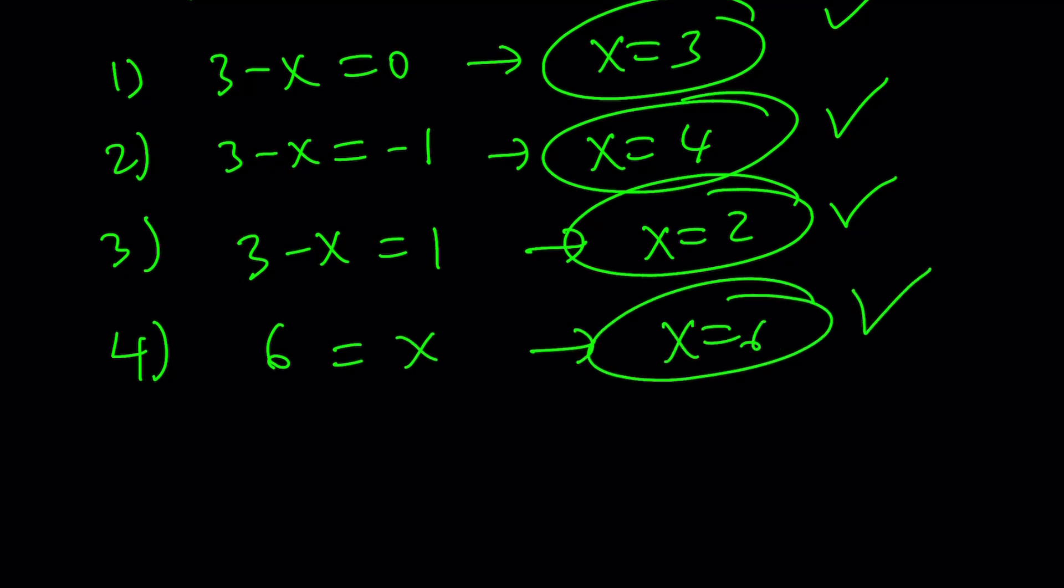So we got four solutions. The solution set consists of 2, 3, 4, and 6. Now, let's go ahead and take a look at the graph, and we'll kind of compare what we found with the graph.